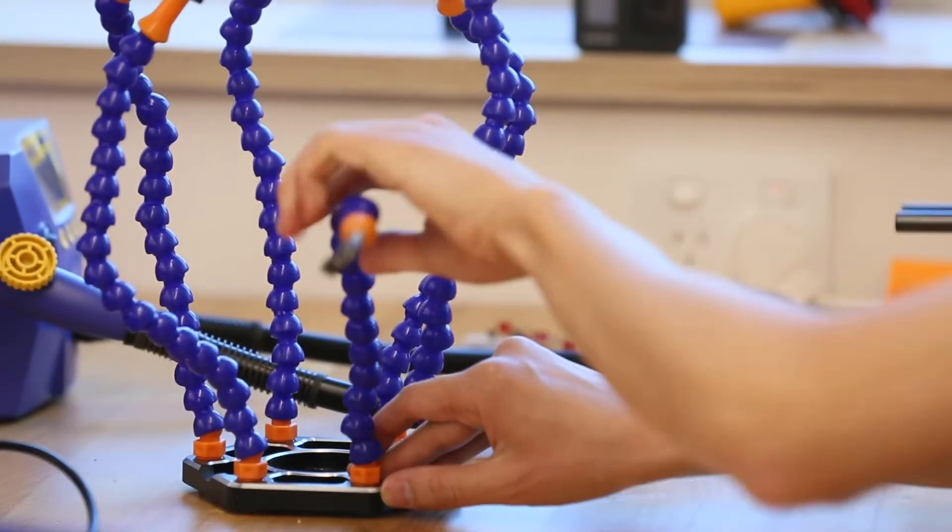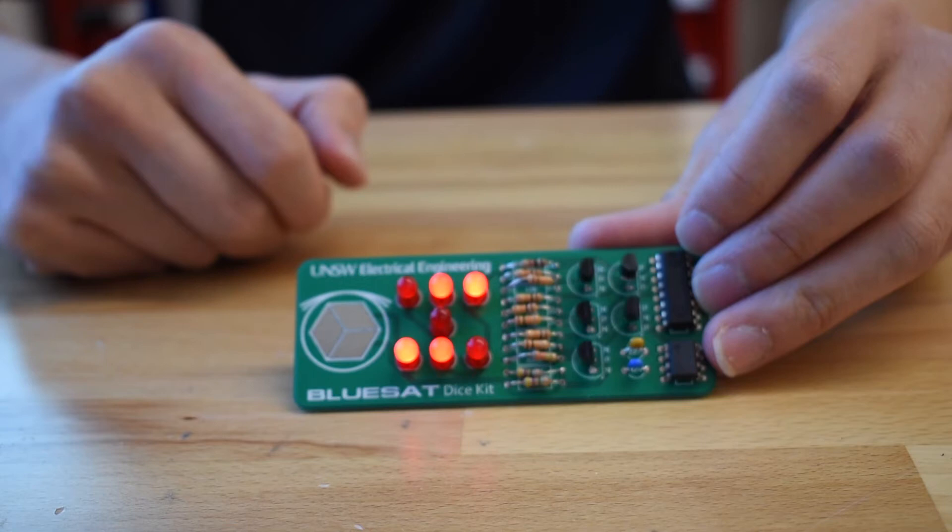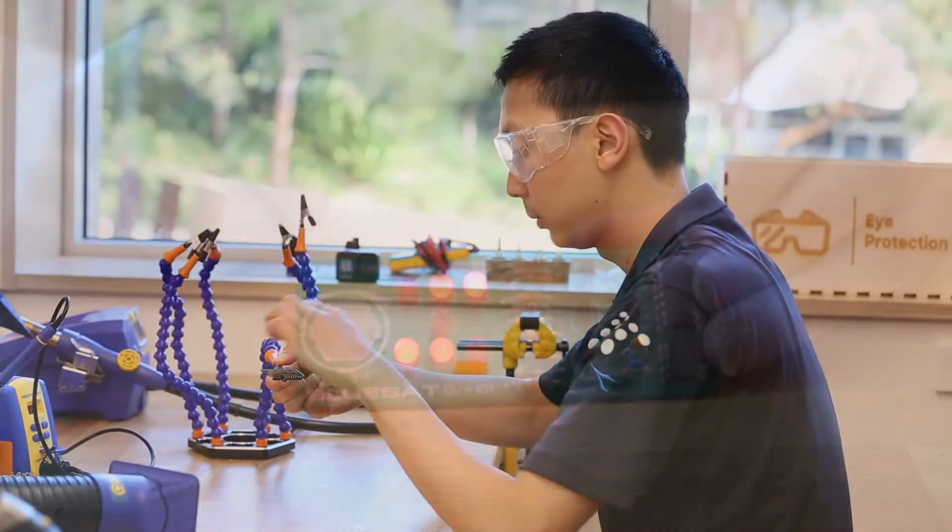For this tutorial we'll be using the DICE kit PCB supplied by BlueSat UNSW as presented here.